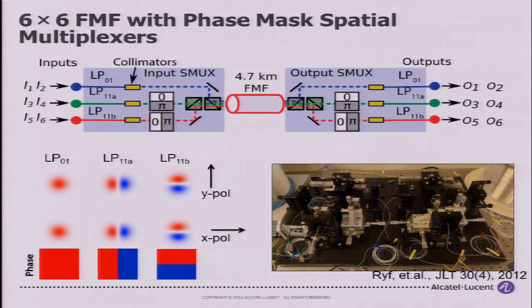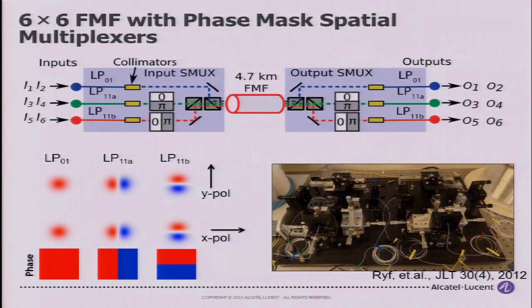Now I want to show some types of mode multiplexers to launch light onto few-mode fibers. This is a brute force technique — a phase-mask multiplexer. You launch Gaussian beams out of collimators and convert them into the fiber modes using phase-masks. The phases of the different modes can be well approximated by zero-pi masks. Then you passively combine these using splitters and image them onto the few-mode fiber. You can demultiplex the modes the same way.